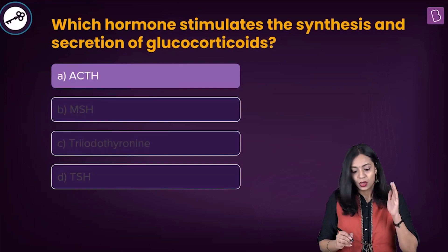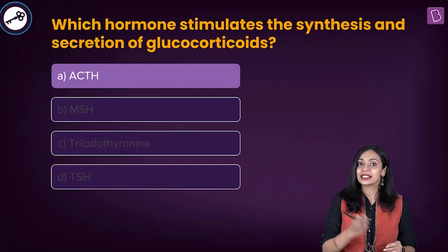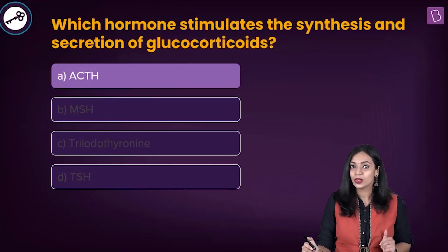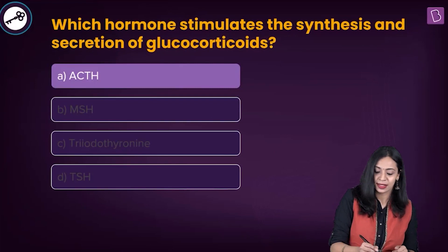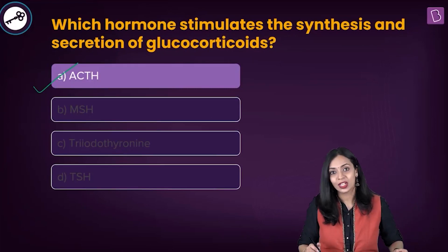We were asked which hormone stimulates the synthesis and secretion of glucocorticoids. The correct answer is ACTH, which is option A.